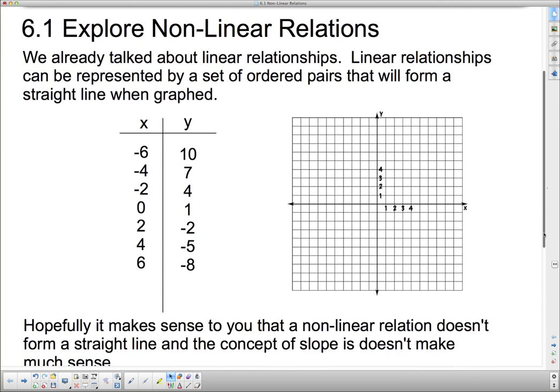We have to remember what a linear relationship was. We already talked about linear relationships. Linear relationships can be represented by a set of ordered pairs that will form a straight line when graphed.